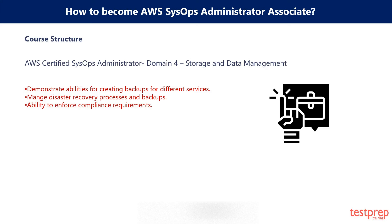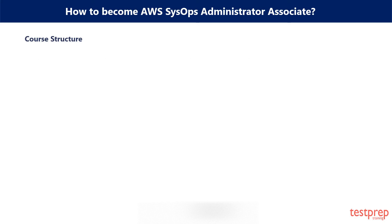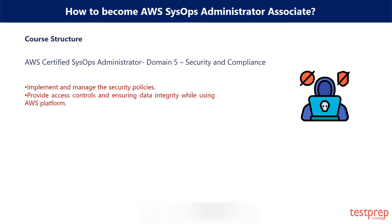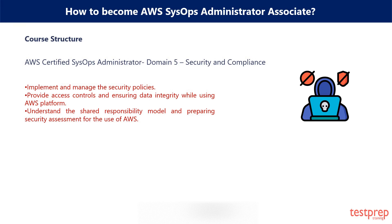Third, ability to enforce compliance requirements. Domain 5: Security and Compliance. In the Security and Compliance domain, there are sections related to security policies and the AWS platform. It covers 18% of the weightage and is also an important section for the exam. This section includes: first, implement and manage security policies; second, provide access controls and ensure data integrity while using AWS; third, understand the shared responsibility model and preparing security assessments for the use of AWS.